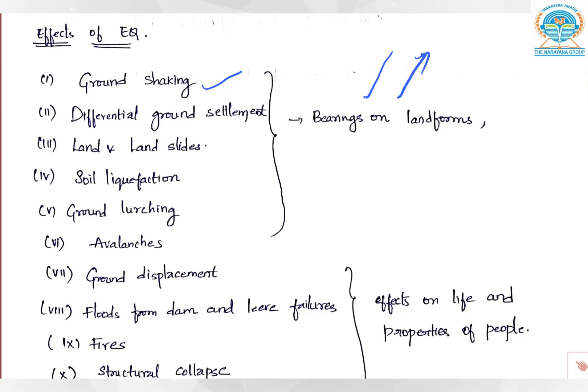One block is moving this way, another block moving that way, so they are getting deformed. Land and landslides occur. It is the sliding of the land. If there is a mountain, the land suddenly falls because of the shaking.